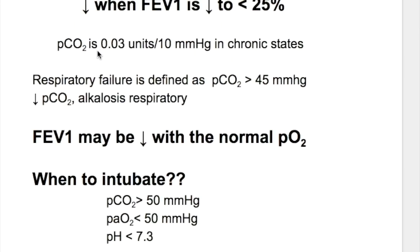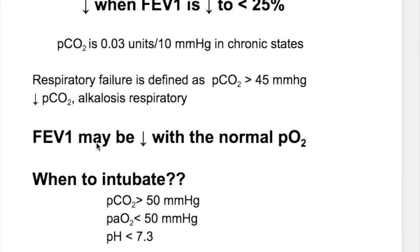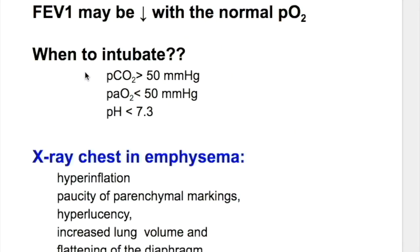PCO2 in chronic emphysema increases by 0.03 units per 10 mmHg in chronic states. Respiratory failure is defined as arterial oxygen of less than 60 mmHg, with or without an increase in carbon dioxide of more than 50 mmHg. FEV1 may be decreased with a normal oxygen level.